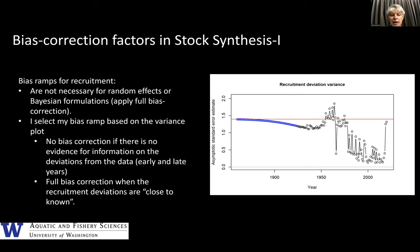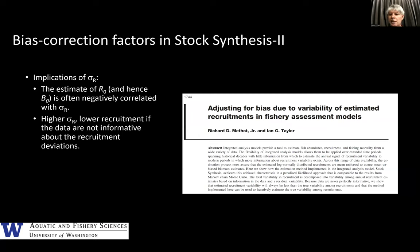Talking more about bias ramps: if using a random effects or Bayesian model you don't need to worry about the bias ramp — which is another reason why you should be doing it. For the bias ramp I follow at least the principle behind r4ss: apply no bias correction when there's no evidence for information content — that blue period in the left panel looks pretty dubious — and then apply full bias correction where there really is good information. This is not inconsequential: if you get sigma-R wrong, depending on how informative your data are, you can end up with incorrect estimates of R0 because of the negative correlation between sigma-R and R0.